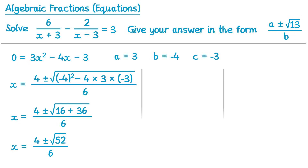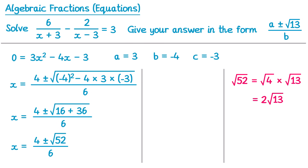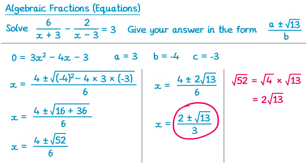Next what we need to do is simplify that square root of 52. Using our surd rules, if we take root 52, that could be expressed as root 4 multiplied by root 13. The square root of 4 is just 2, so this is 2 root 13. So in place of root 52 we could write 2 root 13: x equals 4 plus or minus 2 root 13 over 6. Now this is looking a lot like the answer, but we're still not quite there — that one just has 1 square root 13 and we have 2. The reason is we have a common factor of 2. If we divide all terms by 2, we get x equals 2 plus or minus root 13 over 3. This answer now matches the form we were asked in the question. You can see the value of a is 2 and the value of b is 3.